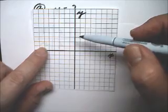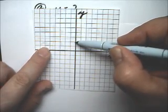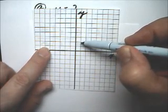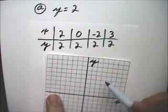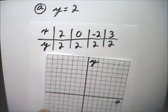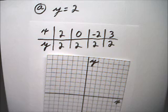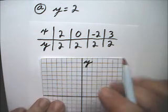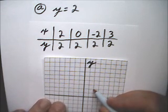So y equals 2 right here. There, and according to my table of values, 2, 2 is there.